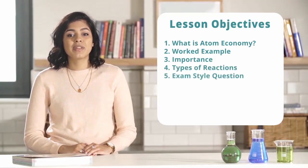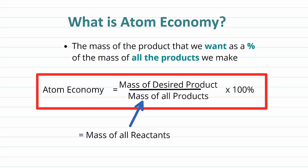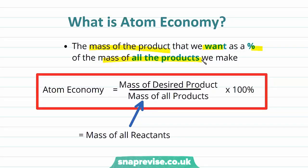We'll also cover an exam style question and finally a summary. Atom economy is the mass of the product that we want as a percentage of the mass of all the products we make. The calculation is: atom economy equals the mass of the desired product divided by the mass of all products times by 100%. We use molar masses to calculate the atom economy of a particular reaction given its equation.